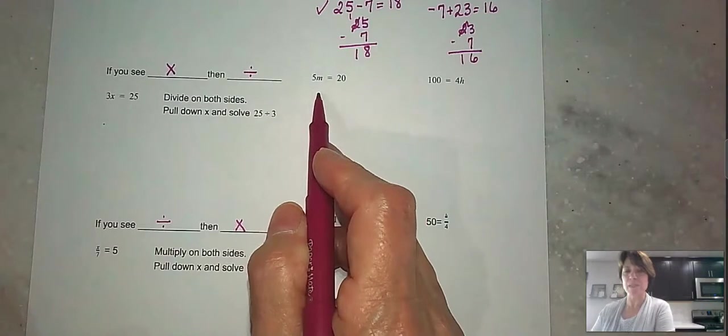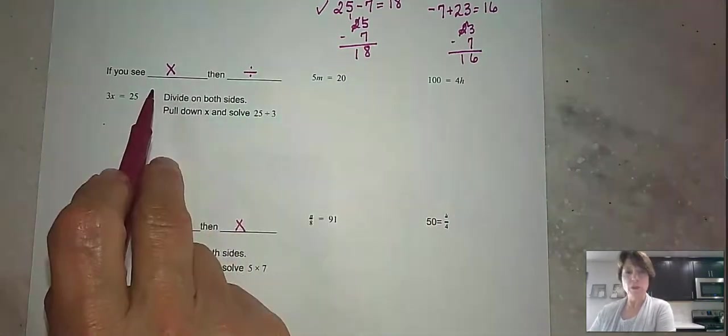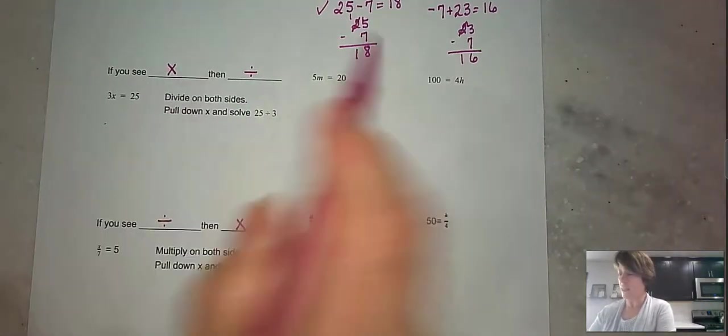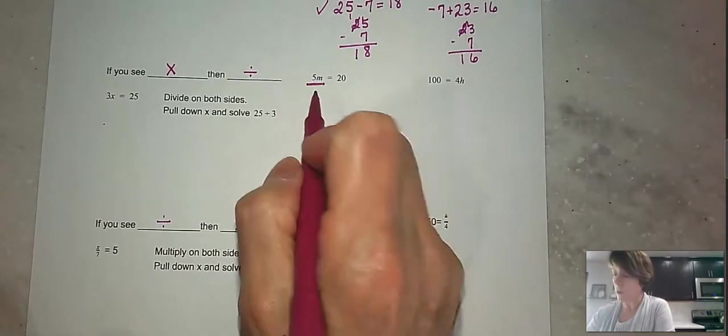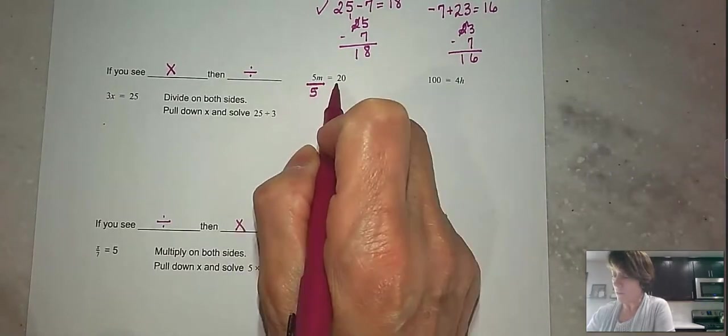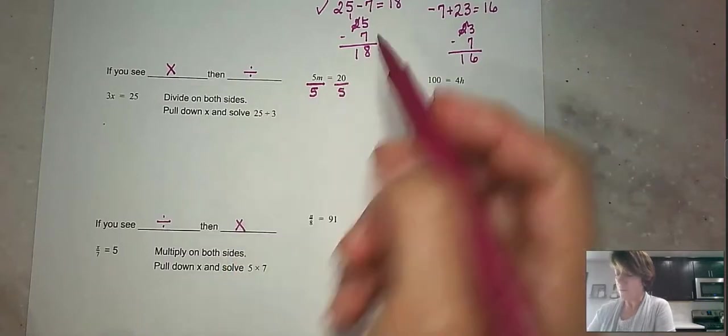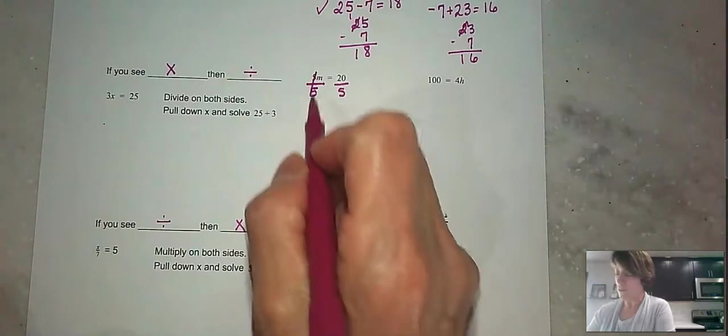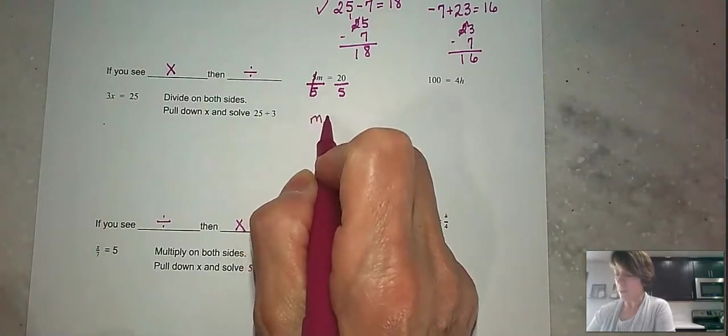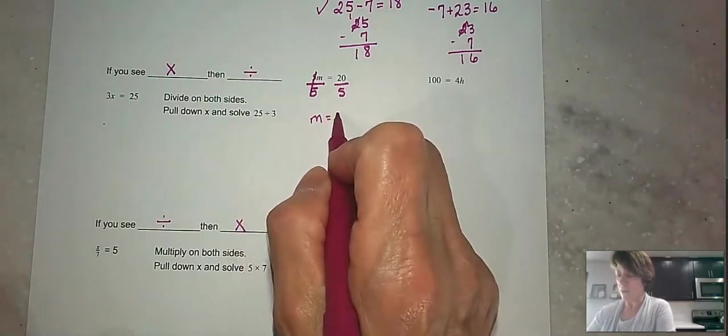All right, but this means 5 times m equals 20. Well, we know that the opposite, then, of multiplying is dividing. Now we can show division like this. We can make a fraction bar. So this is divided by 5. This is divided by 5. 5 divided by 5 is 1, and 1 times m is m. So we can pull down our m, and then 20 divided by 5 would give us 4.